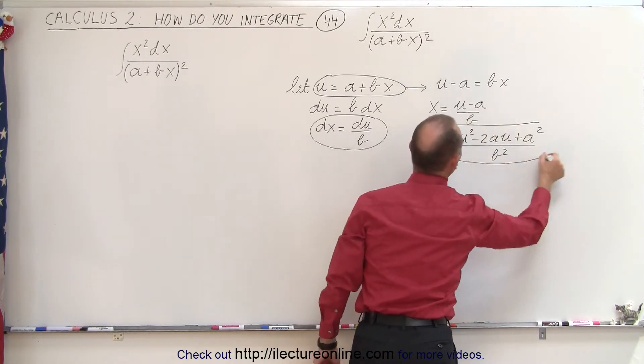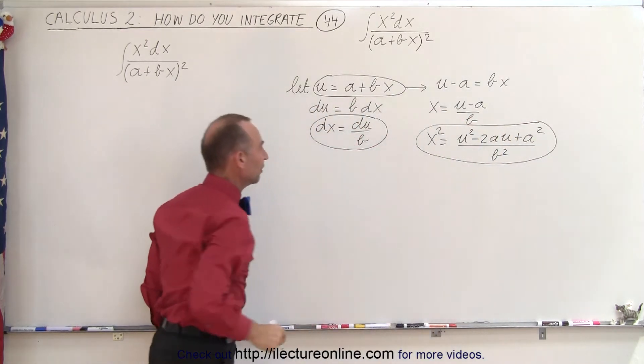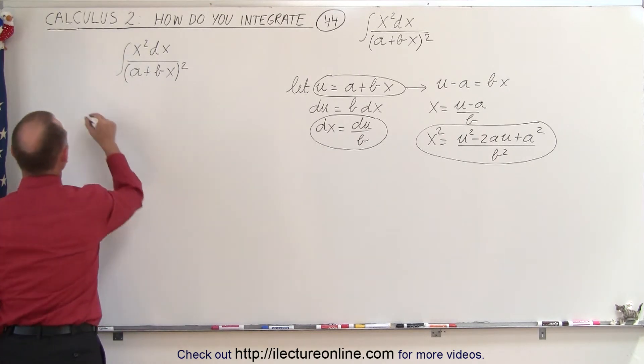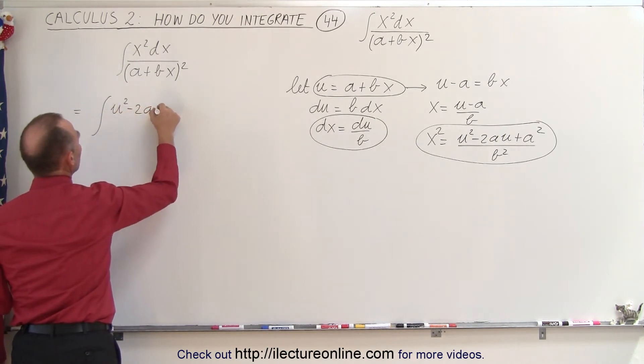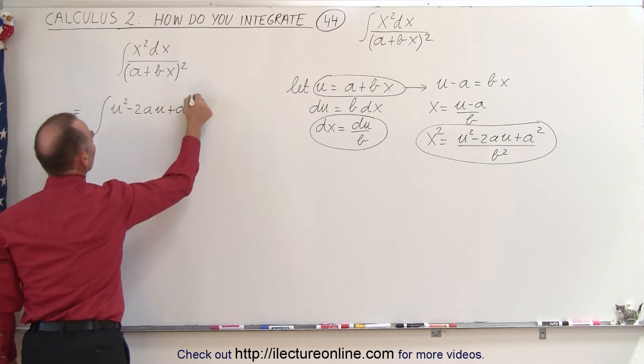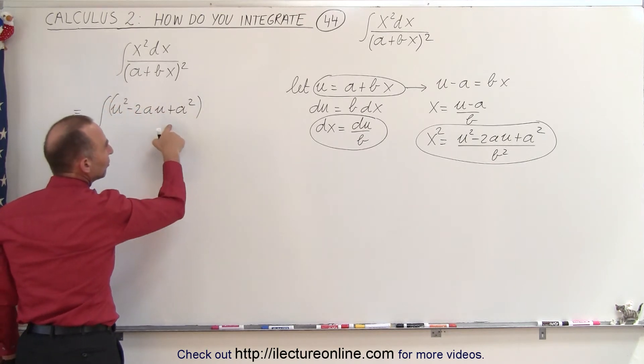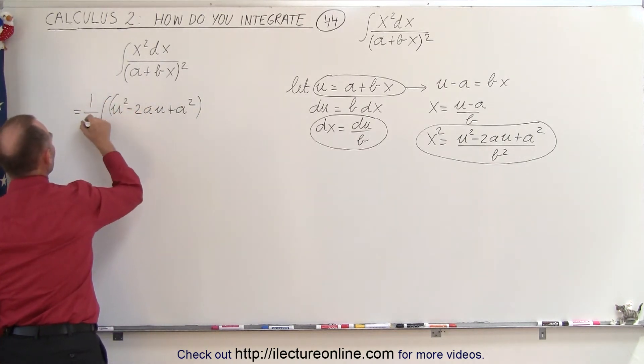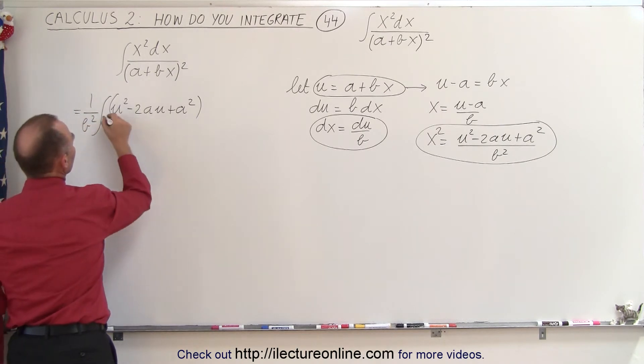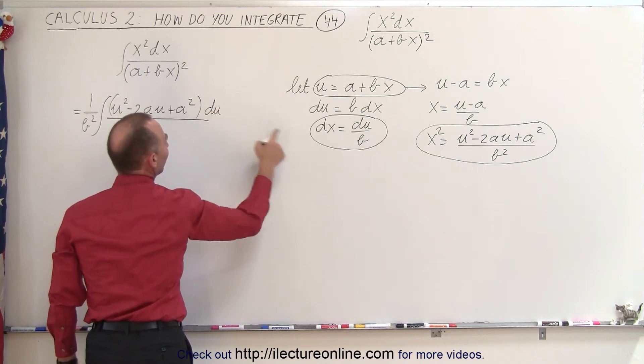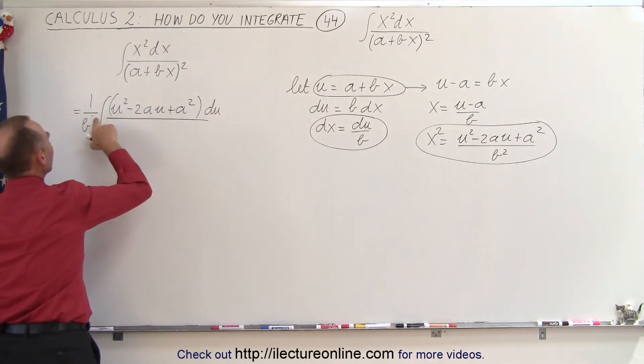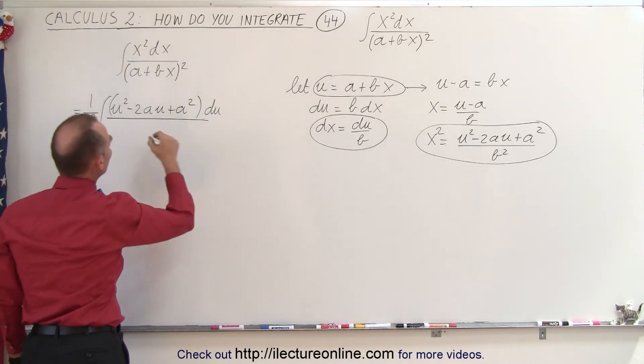And this then also is substituted in the integral. When we do that, let's see what we get. This is equal to the integral of x squared, which is u squared minus 2au plus a squared divided by b squared. But let's say that b squared outside integral sign, so we have 1 over b squared times dx. And dx is equal to du divided by b, let's say that b also outside integral. This becomes b cubed, and in the denominator we end up with a u squared.